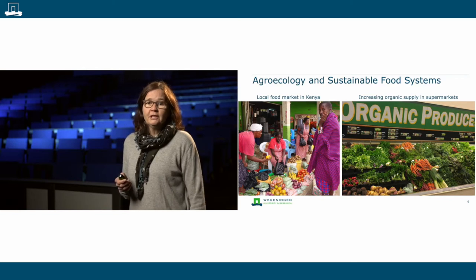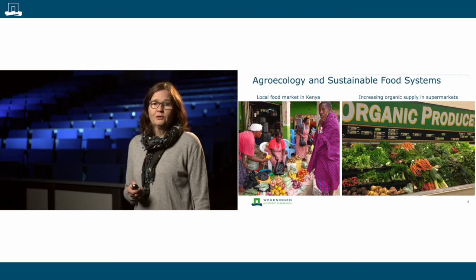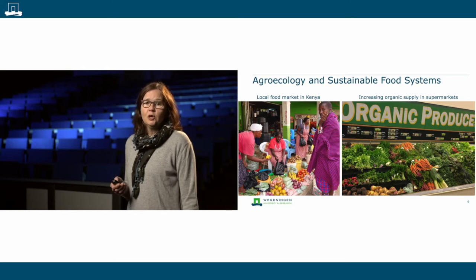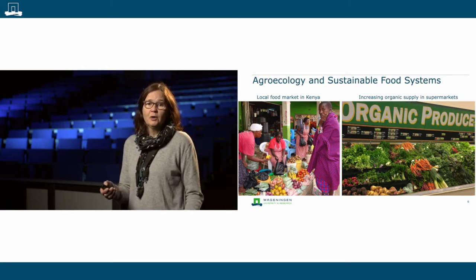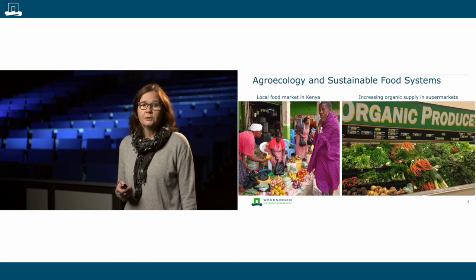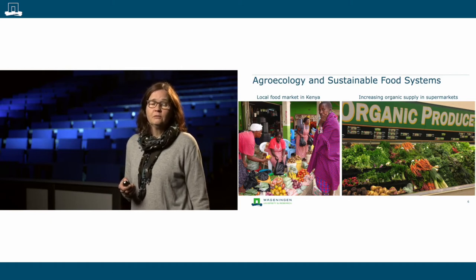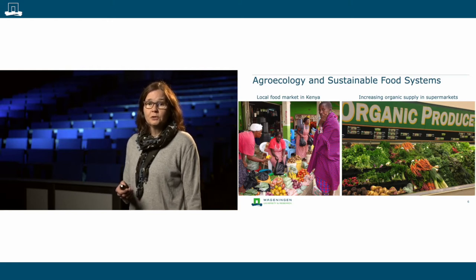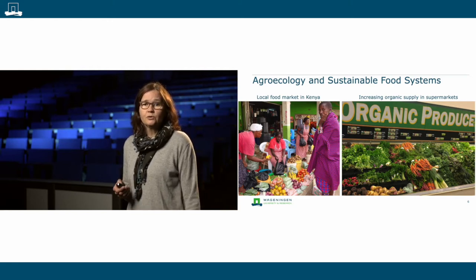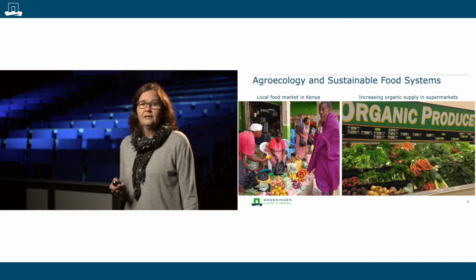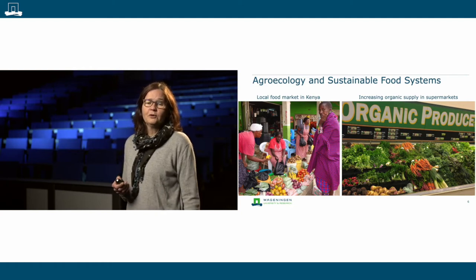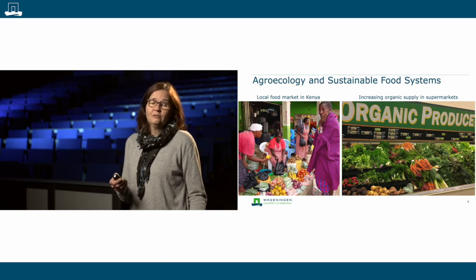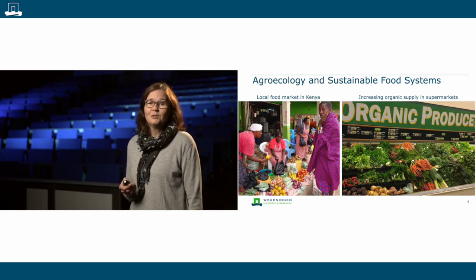Food production can be seen at different global perspectives. For example, in Kenya, small-scale low-input farming is the most common way of performing agriculture. This is quite contrasting to what's being done in Europe, where organic agriculture is certified and strongly controlled, resulting in a high-end product category of organic products in supermarkets, obviously related to higher prices.